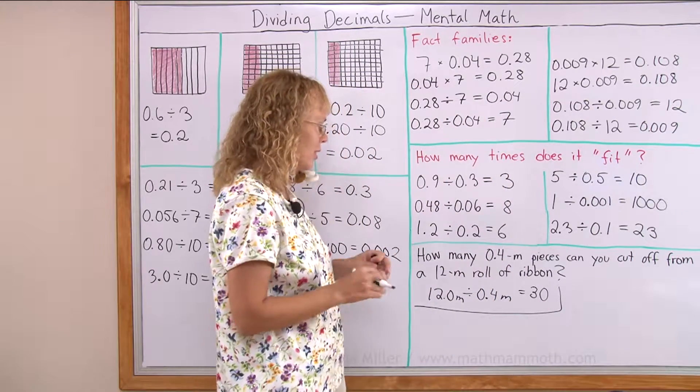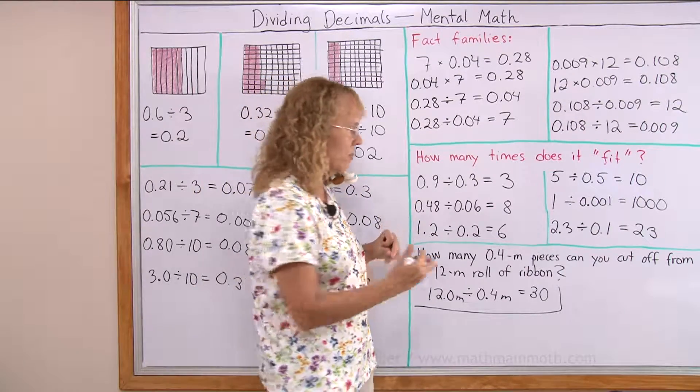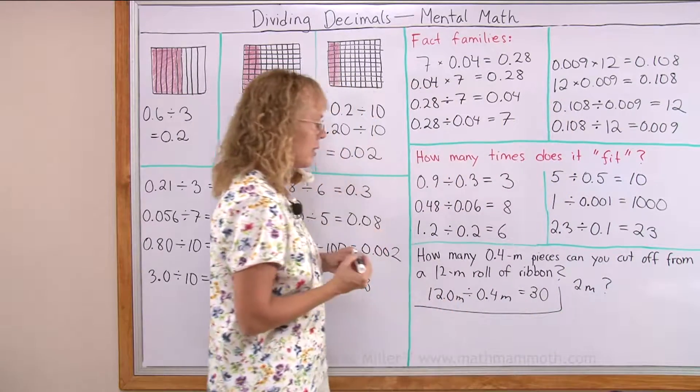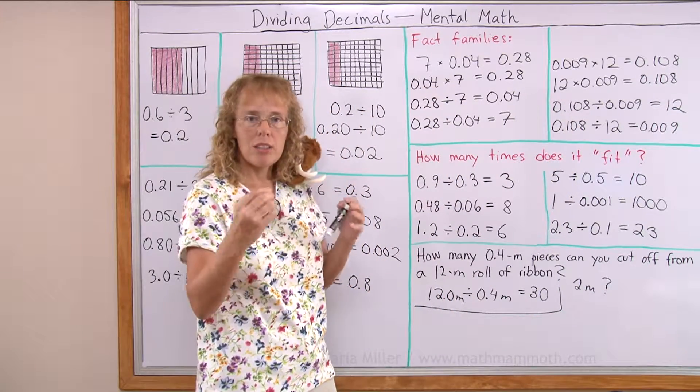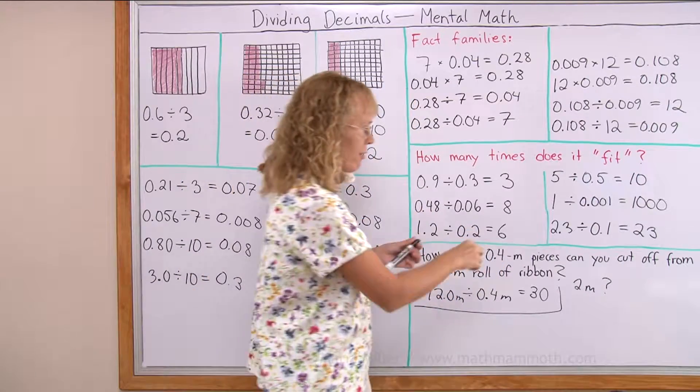2 meters of ribbon? See, you can even think of 200 centimeters and 40 centimeters. You would get 5 pieces.